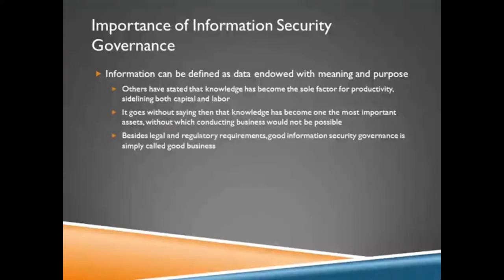Information security governance is really going to start off as a responsibility of the board of directors and executive management. In the long run, they are the ones who are liable for the information or the loss of information — we consider them to be the owners of the information. In order to have effective security governance, you have to have their support. We call that having support from the top down. It needs to be an integral and transparent part of your enterprise governance. Knowledge has become sometimes the sole factor for productivity, sidelining both capital and labor, and the ability to conduct business without it would be impossible.